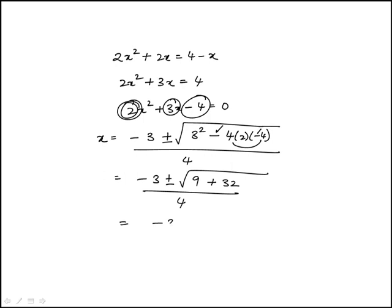So this becomes minus 3 plus or minus square root of 41 over 4, and this is the same as answer choice D.